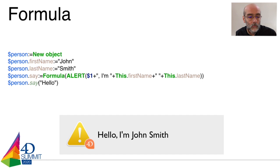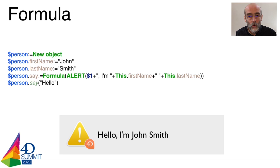When I call my 'say' formula, I use a traditional parenthesis syntax and I can even pass an additional value — here I pass the string 'hello' — so that my formula can access simultaneously parameters I pass at call time and the properties of the object on which I applied my formula. This is important because I can not only have an object which defines properties, but also the behavior — the way to deal with these properties.